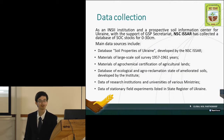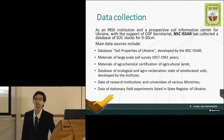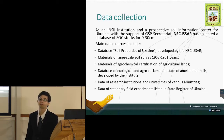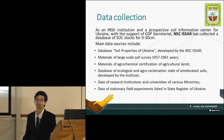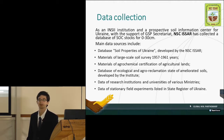As an INSII institution and a prospective soil information center for Ukraine and with the support of GSP Secretariat, our institute has collected a database of soil organic carbon stocks for 0-30 cm. The main sources for this database were both the institute's own vast soil database and the data from various ministries of Ukraine. This work outlined a severe issue: it is very challenging to consolidate all the data from different institutions and ministries into one database for soil analysis.